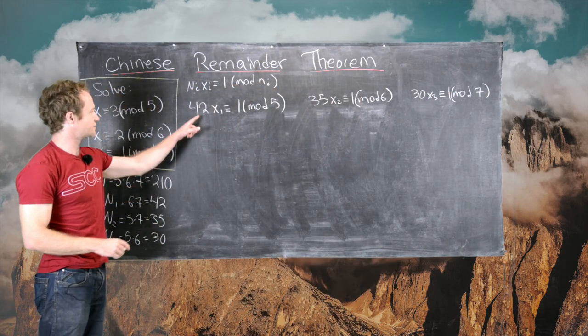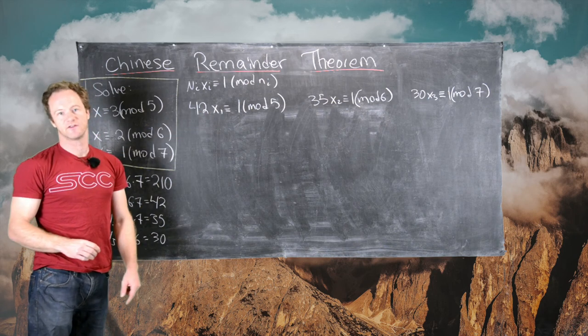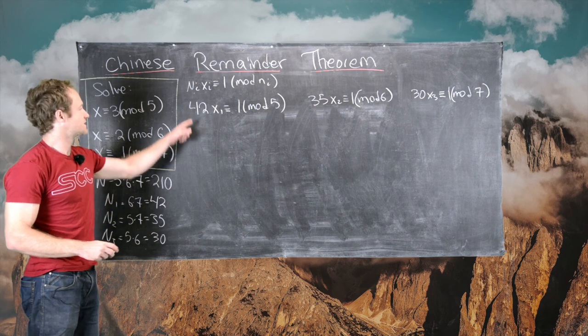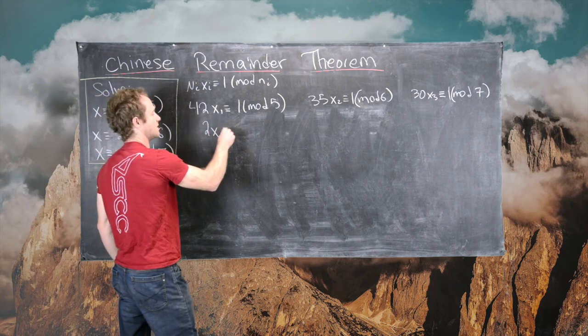So before doing these calculations, it's probably best to simplify these numbers modulo 5, 6, and 7 as appropriate.